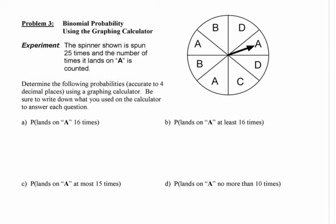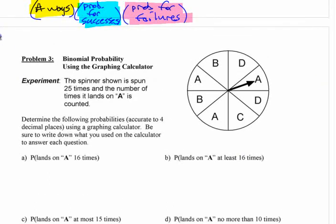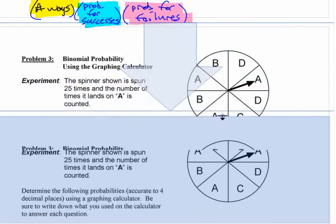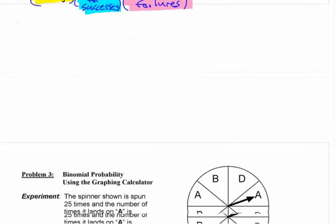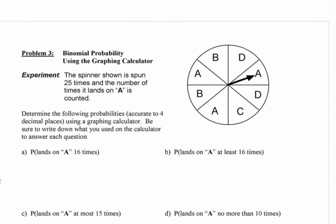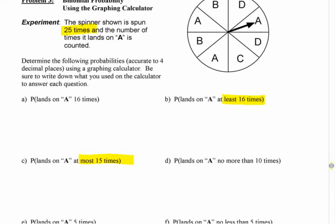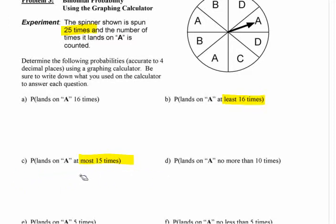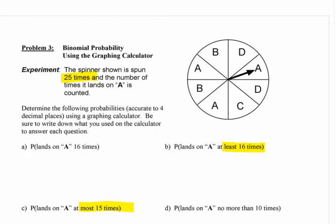To do binomial probability questions with the calculator: if you have something like this with a lot of different cases, you really don't want to do them all manually. Here you're repeatedly doing this 25 times, and if somebody says 'at least 16 times' or 'at most 15 times,' there's a lot of cases to consider — 0, 1, 2, 3 up to 15. You don't want to work out each of those individually and add them together. I want to show you the calculator function that's going to allow you to do this.